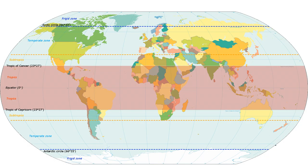Subtropical climates are generally located between 23.5 degrees and 35 degrees north or south on the eastern or leeward sides of landmasses. This climate has long hot summers and short, mild winters, with annual rainfall often concentrated in the warmest part of the year. These climates may occur in southern Asia, the southeastern United States, parts of eastern Australia, and in eastern coastal South America.